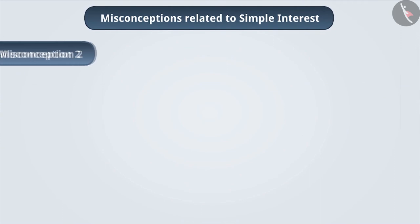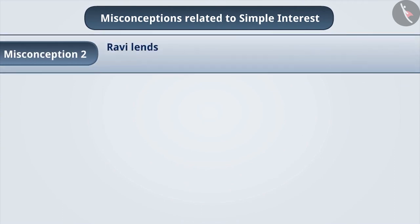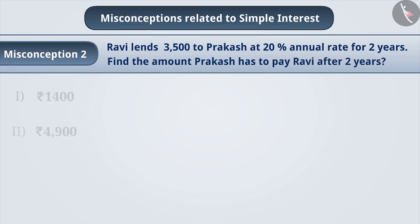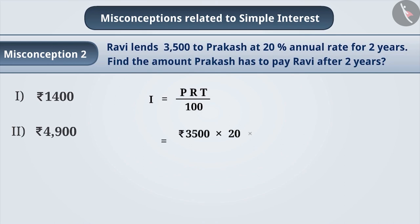Misconception 2. Ravi lends Rs. 3,500 to Prakash at 20% annual rate for 2 years. Find the amount Prakash has to pay Ravi after 2 years. Here, simple interest I = PRT / 100 = 3500 × 20 × 2 / 100, which is equal to Rs. 1400.